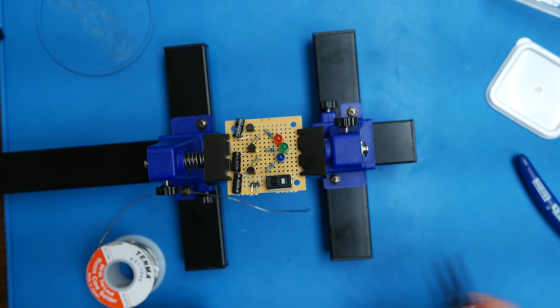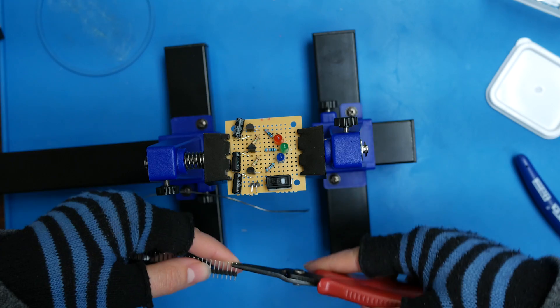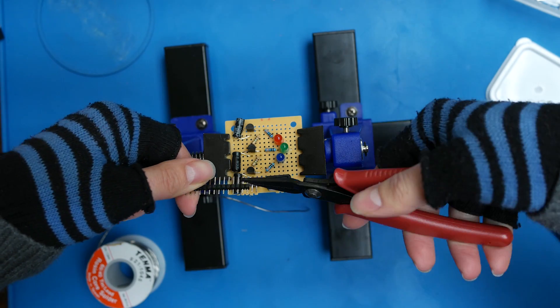Now, I didn't have any right angle pins, so I just took some of these and bent them over with my pliers.